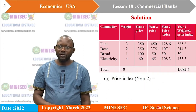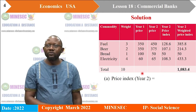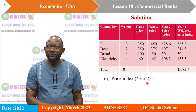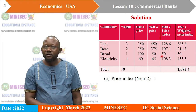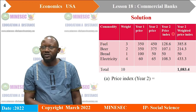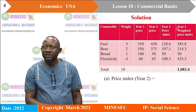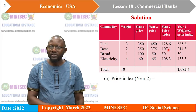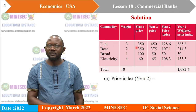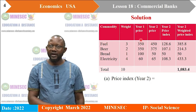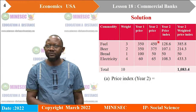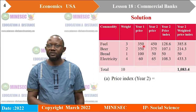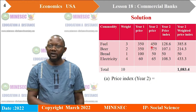This is our solution. To calculate the retail price index — the average index for the entire basket of goods — we first compute the year 2 price index for each commodity. To get the price index, for example for Fuel, we take the current year price of 450, divided by the base year price of 350, times 100, which gives us 128.6.